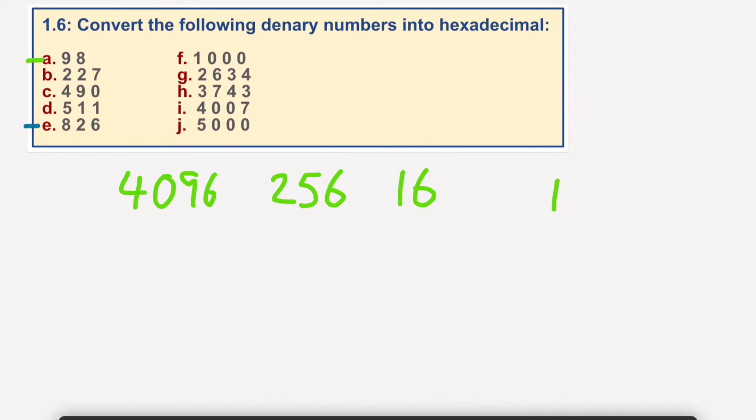Okay, this time we'll have a little go at J, 5000. Now obviously I've left this on the screen. 4096 goes in one time. So we could then take that, like I did before, take that away from that.